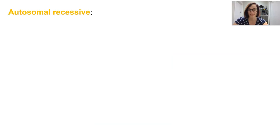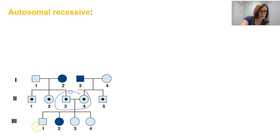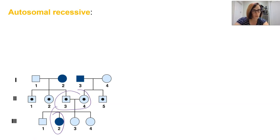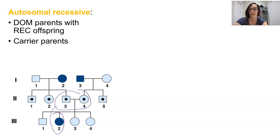Autosomal recessive inheritance is really evident when there are two parents with a phenotype different to their offspring. We've got two carrier parents here, but an offspring with the recessive phenotype. The parents will be unaffected — they have the dominant phenotype — but the offspring will have the affected recessive phenotype. This implies that both parents are carrying that recessive allele, making them both heterozygous for this gene.